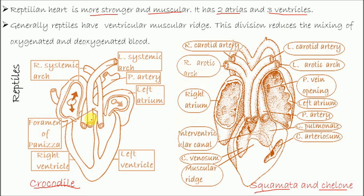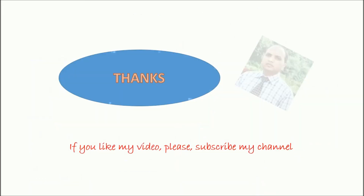Left systemic arch and right systemic arch are interconnected with the help of the foramen of Panizza — here it is, this one is the foramen of Panizza. This has a role to play during the shunting of the blood. So in this way we can say that most of the reptilian heart is five-chambered: two atrials and three ventricles. The three ventricular parts are cavum venosum, cavum pulmonale, and cavum arteriosum. Thank you.